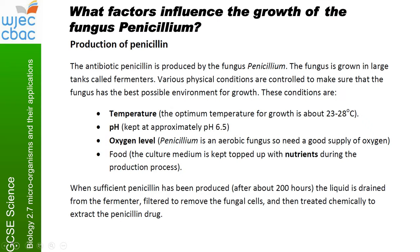So what factors influence the growth of the fungus Penicillium? Because it's a fungus and a microorganism, it's the same kind of factors that would influence the growth of bacteria as well. The antibiotic penicillin is produced by the fungus Penicillium — make sure you don't mix them up. The fungus is grown in large tanks called fermenters, sometimes called a bioreactor, and various physical conditions are controlled to give the fungus the best possible environment for growth.